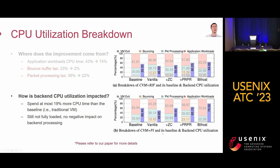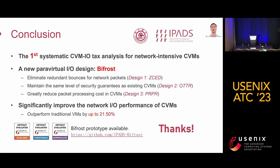In conclusion, we provide the first systematic CVM IO tax analysis for network-intensive CVMs. We also propose a new IO design called BFrost, which eliminates redundant bounces for network packets, maintains the same level of security guarantees as existing CVMs, and greatly reduces packet processing costs. Our prototype significantly improves network IO performance of CVMs, even outperforming traditional VMs by up to 21%. The BFrost prototype is now available on GitHub. Please feel free to try it out.